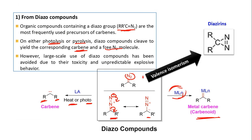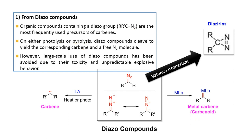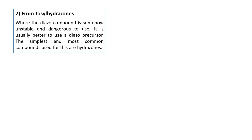Large-scale use of diazo compounds is actually avoided. The reason is their toxicity and also explosive behavior. To get rid of that problem, you can use tosyl hydrazone as a precursor to avoid all these problems. It is usually better to use a diazo precursor — a compound from which the diazo compound will be generated — because diazo compounds are difficult to use directly due to their unstable nature and potential for explosion.